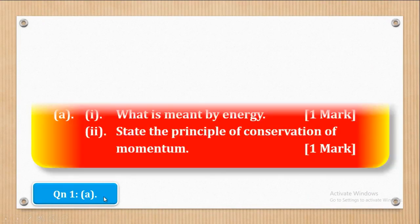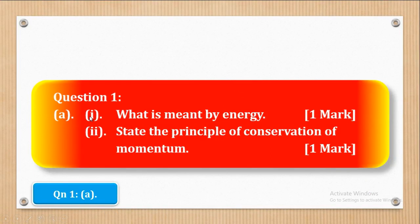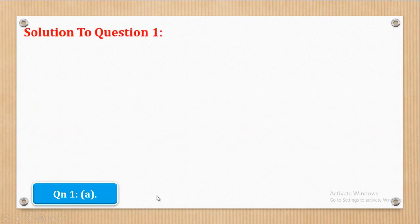We shall begin with question 1a. Roman 1 asks: what is meant by energy? That is one mark. Roman 2 asks: state the principle of conservation of momentum, also one mark. Let's first see how part A was answered.